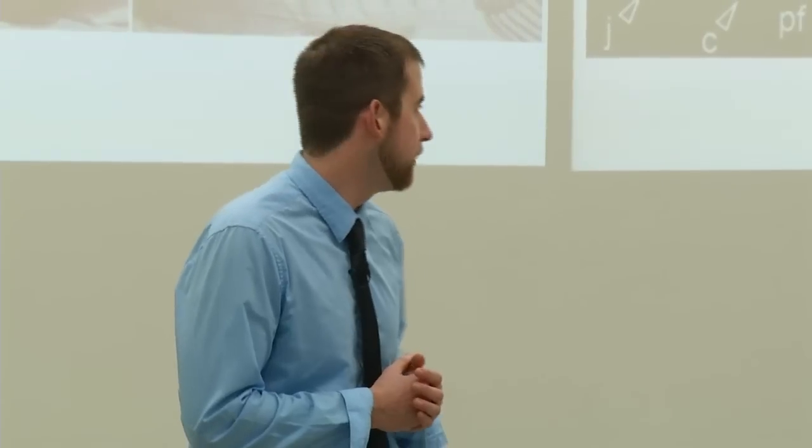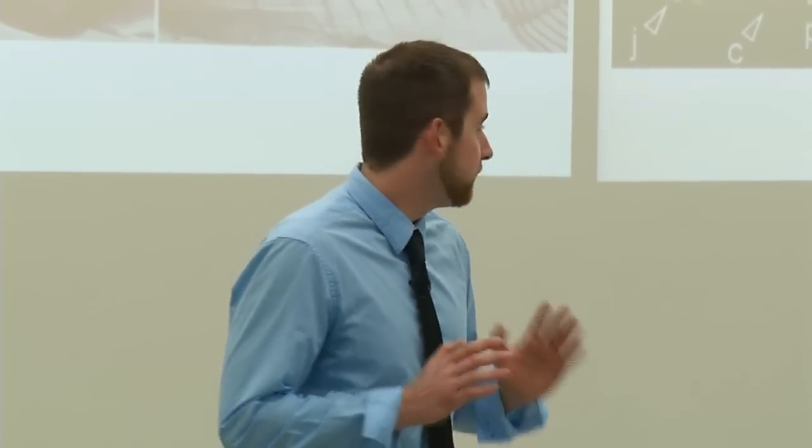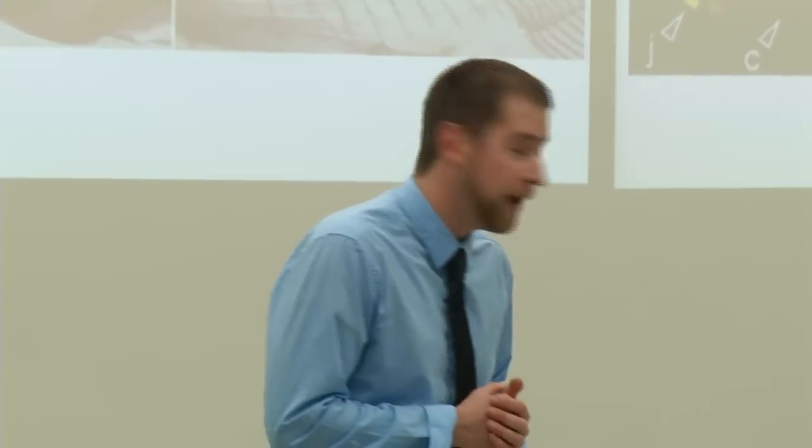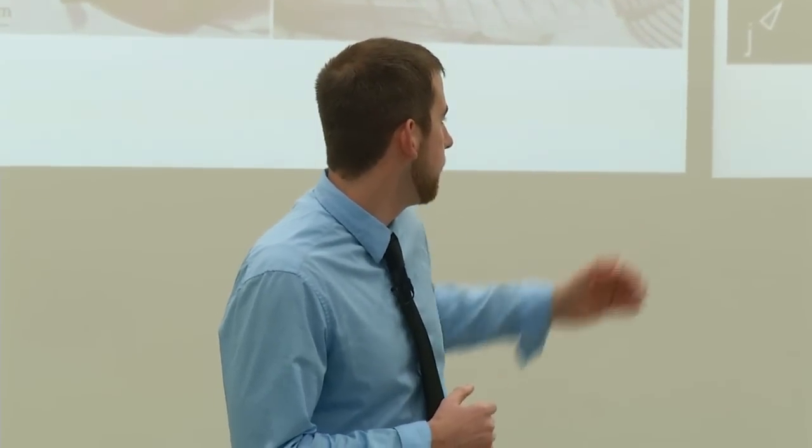Obviously, I can't experiment on humans in the laboratory, so the model organism I will be using is the zebrafish. Zebrafish is a good model organism because it has bones, as you can see stained here in red, and fat, as you can see here fluorescing in yellow. Both of these tissues — bone and fat — are similar to the bone and fat that we have in humans.